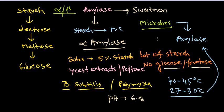For beta amylase, we can rely on plants, but we also use the bacterium Bacillus polymyxa. Bacillus subtilis mainly gives us alpha amylase, while Bacillus polymyxa gives us beta amylase. The beta amylase from Bacillus polymyxa is more stable than plant-derived beta amylase, and its main task is to produce maltose syrup.